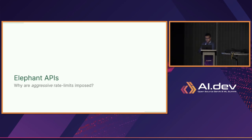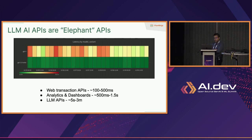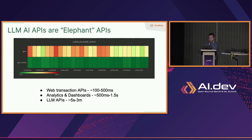If you look at the latency profile of different models that OpenAI has, these APIs are unlike anything we've seen in the past. For comparison, we've been dealing with a lot of 'mice' APIs — web-scale transactional APIs like search, shopping cart checkouts, catalog browsing — with response times of maybe 100 to 500 milliseconds. In the OLAP world loading dashboards with Apache Druid or Cassandra, you're talking 500ms to 1.5 seconds.